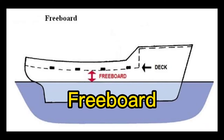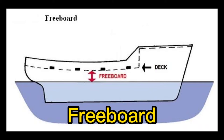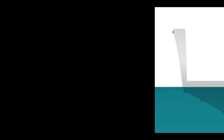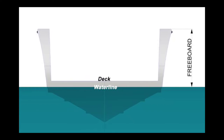Freeboard: The part of the hull that is above the water. Freeboard is usually given in meters, e.g. 6 meters or 10 meters, meaning that 6 or 10 meters of the hull is above the water. The more cargo the ship is carrying, the less will be her freeboard. A ship with little cargo may have a freeboard of 15 meters, but the same ship with a full cargo may have a freeboard of 6 meters.